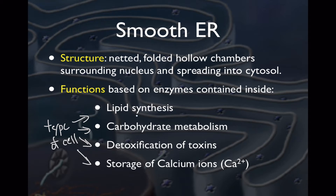The smooth part of the endoplasmic reticulum is primarily where you get lipid synthesis, where phospholipids and other lipids are made. We also get carbohydrate metabolism — carbohydrates being taken apart or manufactured — and detoxification of toxins such as pharmaceuticals, drugs, and aspirin, which are detoxified by the smooth ER in liver cells, for example. And especially in muscle cells, the smooth ER is where calcium ions are stored.